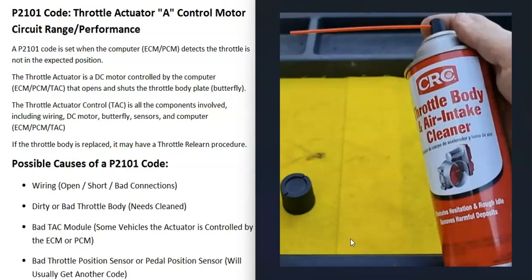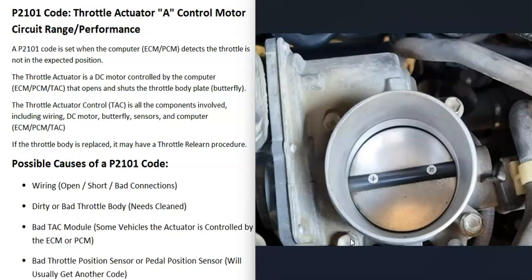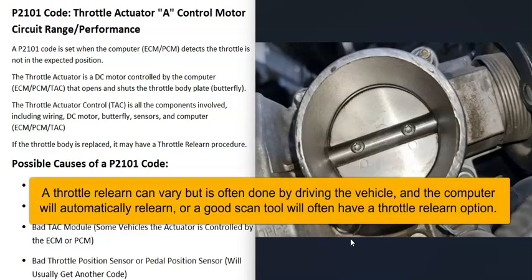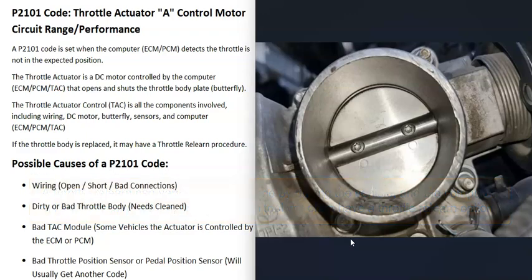To clean it, use throttle body air intake cleaner — spray it down inside real good, use a small toothbrush to scrub, then wipe it out with a clean rag. That can solve a lot of issues. Note that after cleaning, the vehicle may run rough for 30 seconds to a minute until the cleaner burns away, but usually the engine runs better after that. Also, some vehicles require a throttle relearn procedure after cleaning or replacing the throttle body, so do a little research on your specific vehicle.